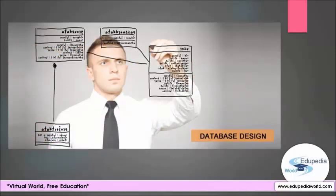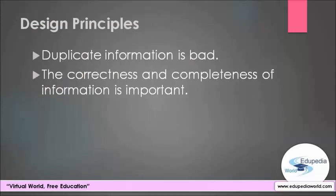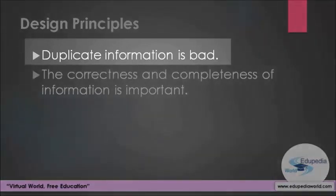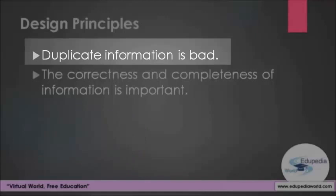In the end of this lecture, you are much more likely to end up with a database that meets your needs and that can easily accommodate change. Certain principles guide the database design process. The first principle is that duplicate information, or so-called redundant data, is bad because it wastes space and increases the likelihood of errors and inconsistencies.